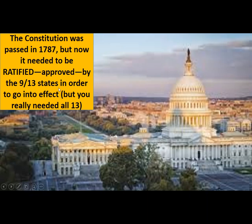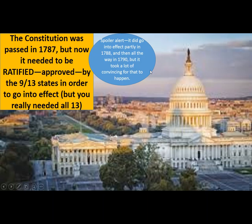But you really need all 13 states, because you need all 13 states saying we're done with the Articles of Confederation — this is the new document that will bind the 13 states together. So spoiler alert: it did go into effect, partly in 1788, and then all the way in 1790. I'll explain the difference between these two dates in a second.